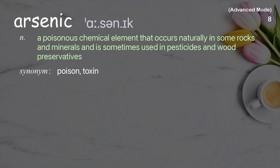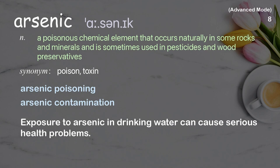Arsenic: a poisonous chemical element that occurs naturally in some rocks and minerals and is sometimes used in pesticides and wood preservatives. Examples: arsenic poisoning, arsenic contamination. Exposure to arsenic in drinking water can cause serious health problems.